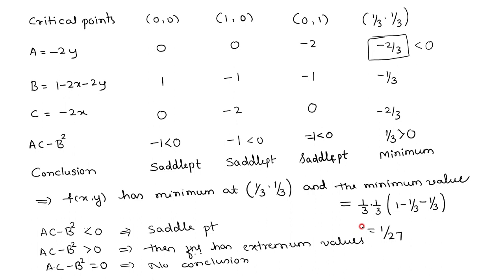Substituting x = 1/3 and y = 1/3 into the function: f = (1/3)(1/3)(1 - 1/3 - 1/3) = (1/9)(1/3) = 1/27. So the maximum value of this function is 1/27. Thanks for watching.